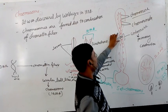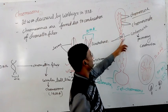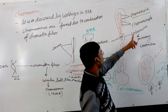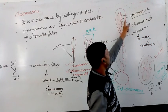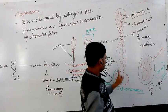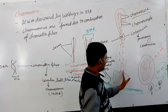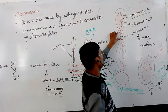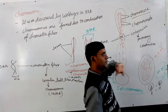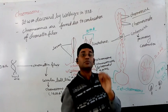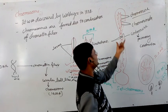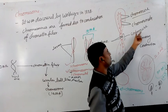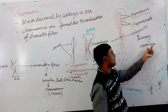This is called centromere. Centromere is the middle portion, the middle constriction, that is the primary constriction, and it is also called primary constriction.